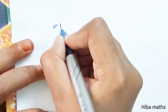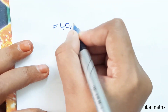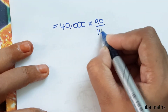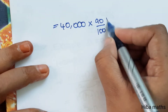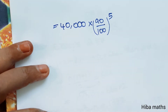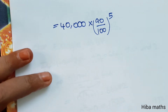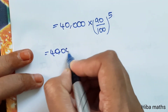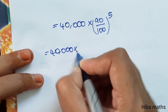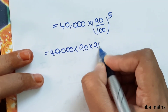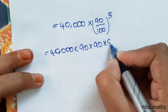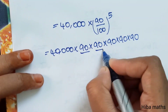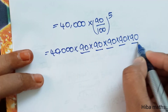So the value is 40,000 into (90 by 100) to the power 5 — that is, 5 times 90 divided by 100. We calculate 40,000 multiplied by (90/100)^5.